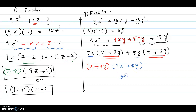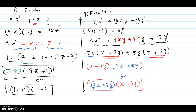Either you can leave the answer as x plus 3y times 3x plus 5y, or switch the two factors and write 3x plus 5y times x plus 3y. Hope this video helps.